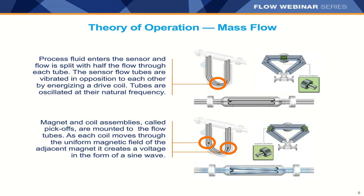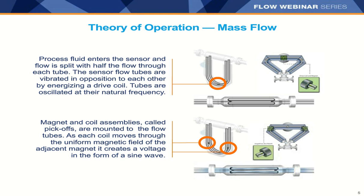The theory of operation for mass flow is quite simple. The process fluid enters the sensor and the flow is split halfway through the sensor tube. The sensor flow tubes are vibrated in opposition of each other by an energizing drive coil at their natural frequency — think of this like a tuning fork. With the Coriolis meter, we send a pinging signal from our transmitter to the drive coil, constantly vibrating these tubes at their natural frequency so the vibration does not die out.